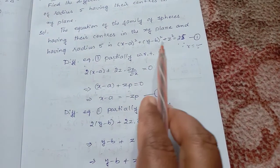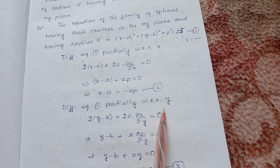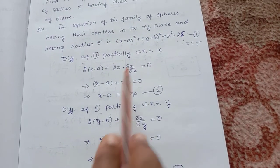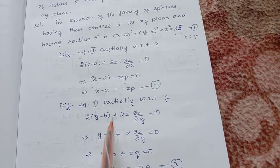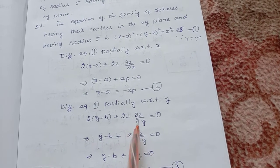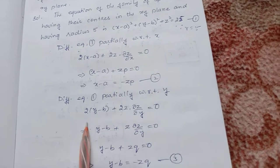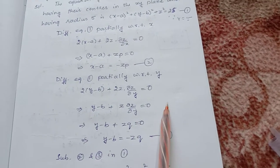Again take equation 1, partially differentiate with respect to y. We will get 2(y - b) + 2z(∂z/∂y) equal to 0. Taking 2 common and sending to the other side, it becomes 0.